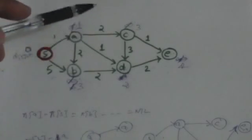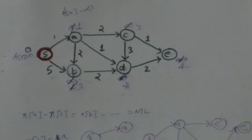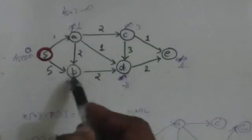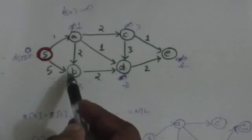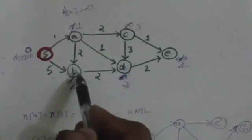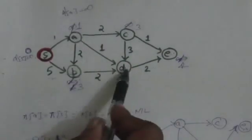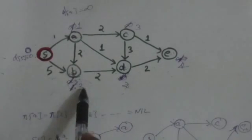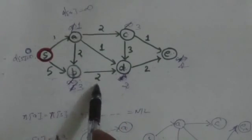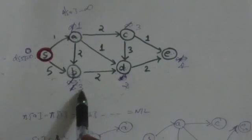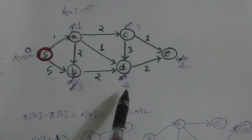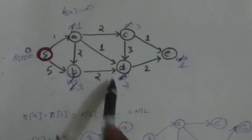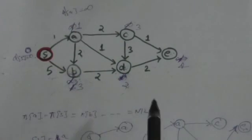Now we have 3 unprocessed vertices: B, C, and E. We process vertex B next. The only outgoing edge from B is BD. d(B)+weight(BD) = 3+2 = 5, which is not less than d(D)=2. So we make no change and leave it as is. Vertex B is now processed.